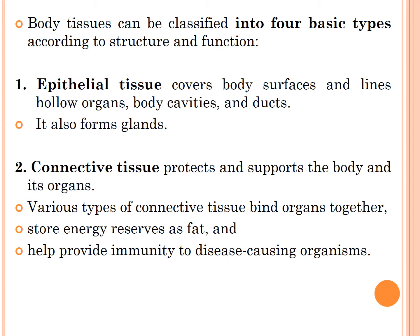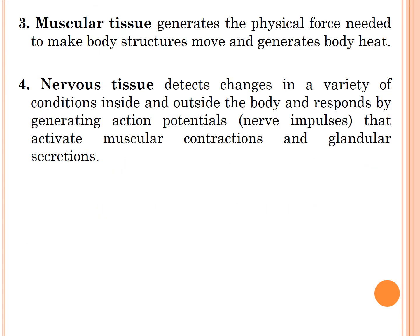The first is epithelial tissue, which covers body surfaces and lines whole organs, body cavities, and ducts, and also forms glands. The second type is connective tissue, which protects and supports the body and its organs. Various types of connective tissue bind organs together — as per its name, it connects two parts of the body.